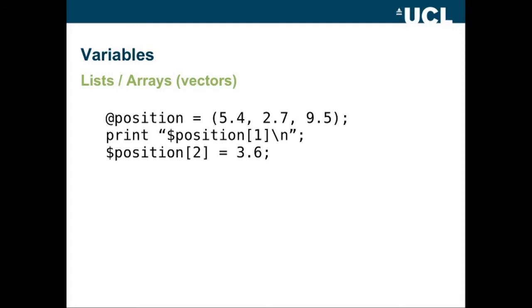Lists or arrays or vectors, depending how you want to look at them, are referred to using an at sign. So here we're saying at position equals 5.4, 2.7, 9.5. These might be x, y, z coordinates. And if we wanted to print one of these, then we number our lists just as we do in Python from zero. So this would be position zero, position one, position two.